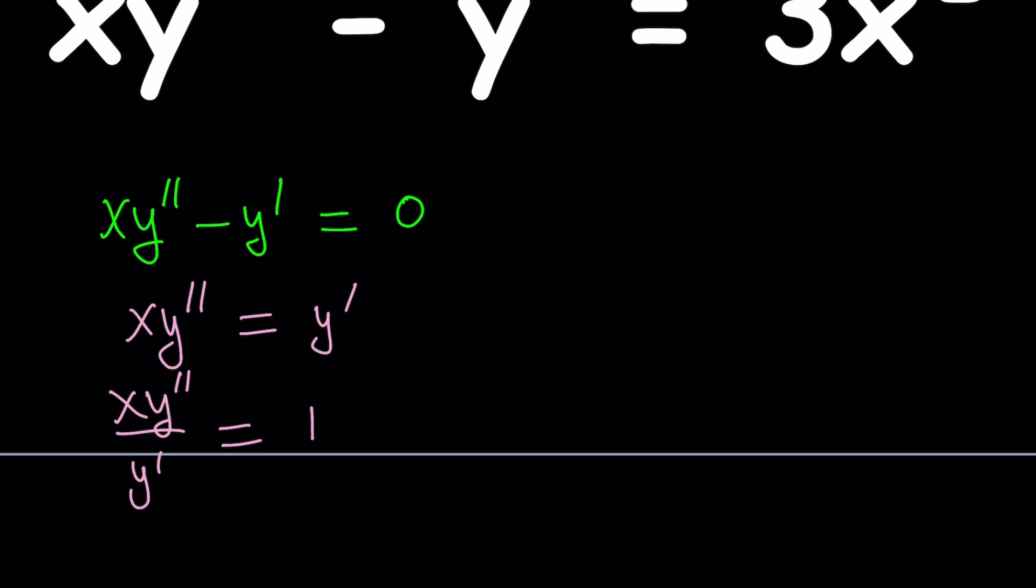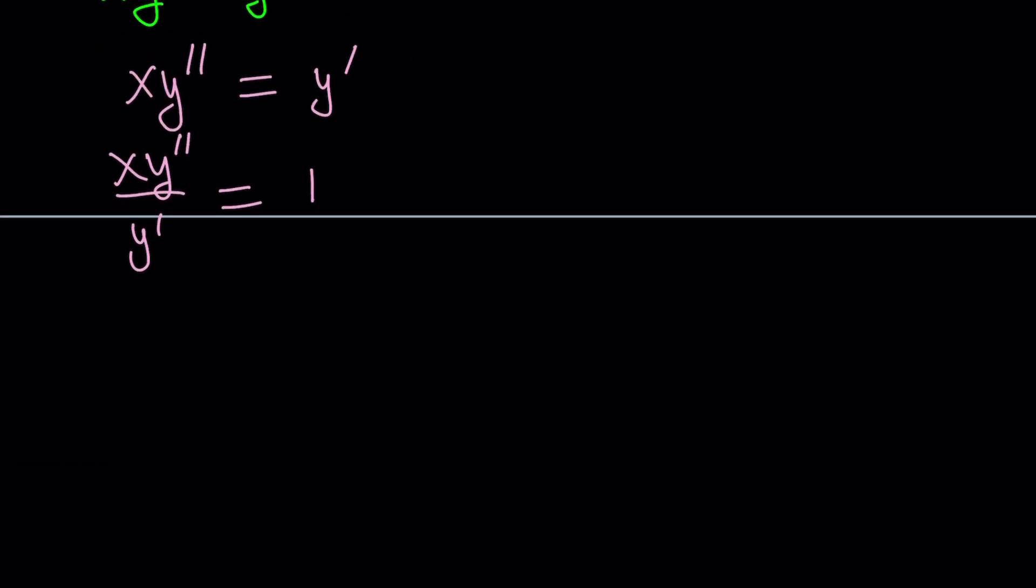The reason behind that is I actually want to bring the y double prime and y prime together. You'll see in a little bit why that's helpful. Divide both sides by x now. You're going to get y double prime divided by y prime equals 1 over x.